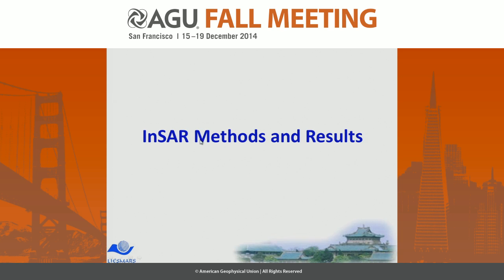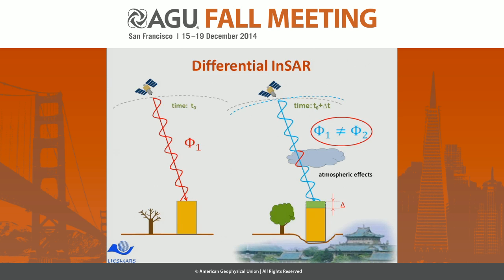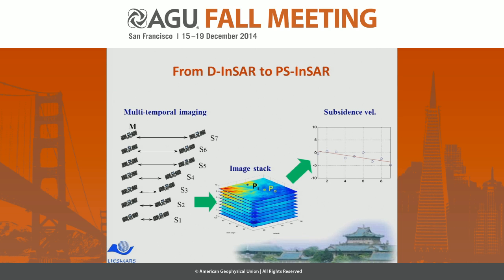As you know, deformation or movement is the key point for monitoring landslides. Differential InSAR can detect small or slow movement. To overcome the limitation of differential InSAR, PS-InSAR and other time series analysis methods were proposed. In last year's presentation, I discussed the results from PS-InSAR.